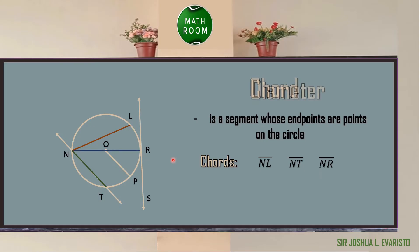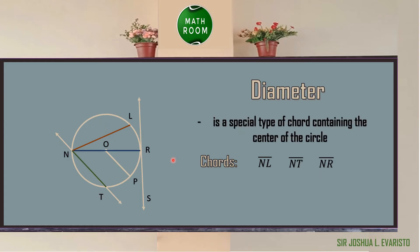Another term we need to remember is the diameter. It is a special kind of chord containing the center of the circle. Which of the given three chords is an example of a diameter? The example of the diameter is segment NR, because this is the chord that contains the center point O.